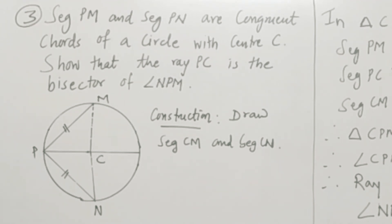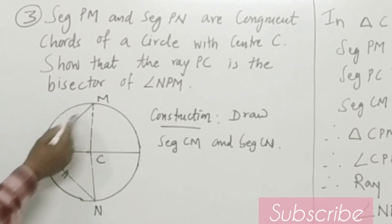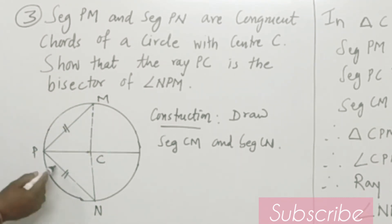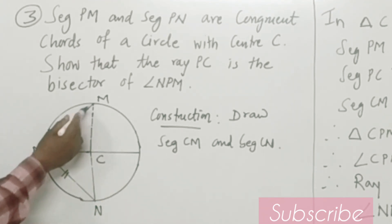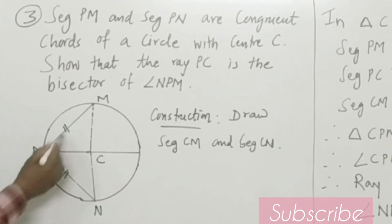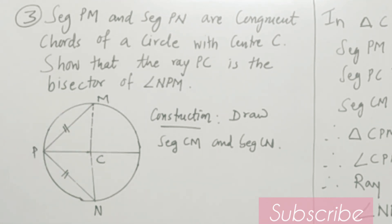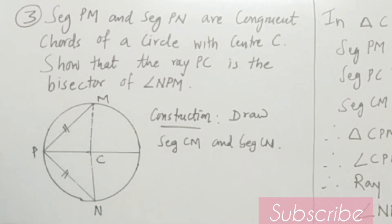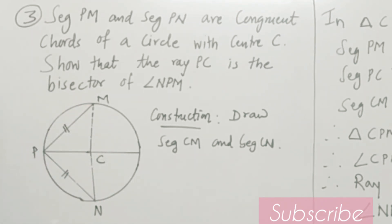For the third example: segment PM and segment PN are congruent chords of a circle with center C. Show that ray PC is the bisector of angle NPM. Let us consider the circle with center C. Segments PM and PN are two congruent chords. We have to prove that ray PC is the angle bisector of angle NPM. Construction: draw segments CM and CN. Since C is the center of the circle, CM and CN are radii of the circle.